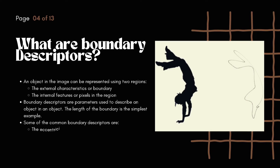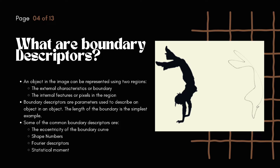Before talking about Fourier descriptors, let's talk about what boundary descriptors are. An object or shape in an image can be represented in two ways: either using its external characteristics, specifically the boundary of the shape, or using its internal features or the pixels in that particular region. Boundary descriptors is a technique where we approximate or describe the shape of an object using the boundary of the object.